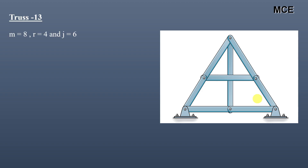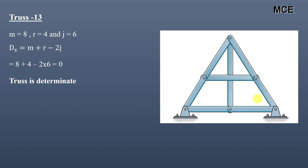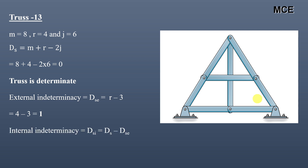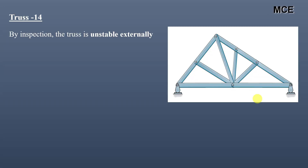For truss thirteen, this truss has 8 members, 4 reactions, and 6 joints. ds = 0, so the truss is determinate. External indeterminacy equals 4 − 3 = 1, and internal indeterminacy equals 0 − 1 = −1. So external indeterminacy is 1 and internal indeterminacy is −1, making the total indeterminacy 0 — the truss is determinate.